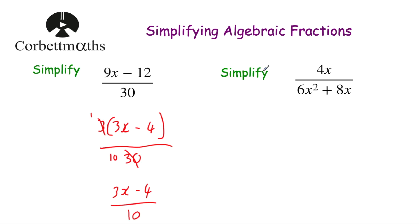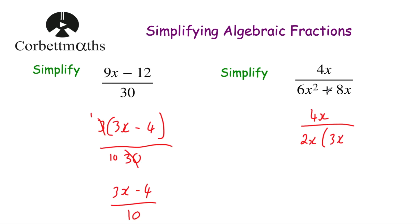Let's have a look at our next question. We've been asked to simplify 4x over 6x squared plus 8x. This time we're going to factorise the denominator. The numerator remains as 4x. For 6x squared plus 8x, both terms are divisible by 2x, so we take 2x out: 2x bracket 3x plus 4, since 6x² ÷ 2x = 3x and 8x ÷ 2x = 4.